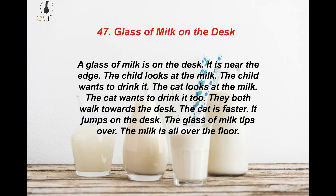A glass of milk is on the desk. It is near the edge. The child looks at the milk. The child wants to drink it. The cat looks at the milk. The cat wants to drink it too. They both walk towards the desk. The cat is faster. It jumps on the desk. The glass of milk tips over. The milk is all over the floor.